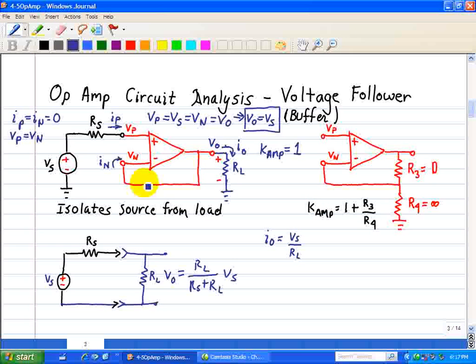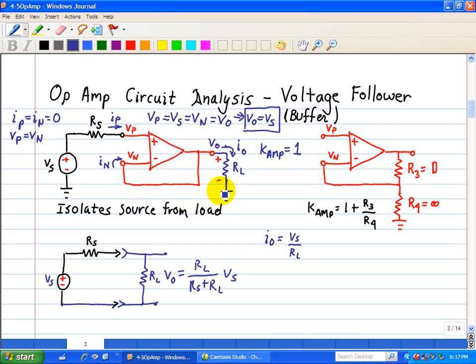Now we apply KCL at the reference node, and our reference node is this ground point. At the reference node, we discover that IP is equal to IO. But IP is equal to 0, which implies that IO is equal to 0, which implies that VS is equal to 0, and it appears that the KCL is violated.